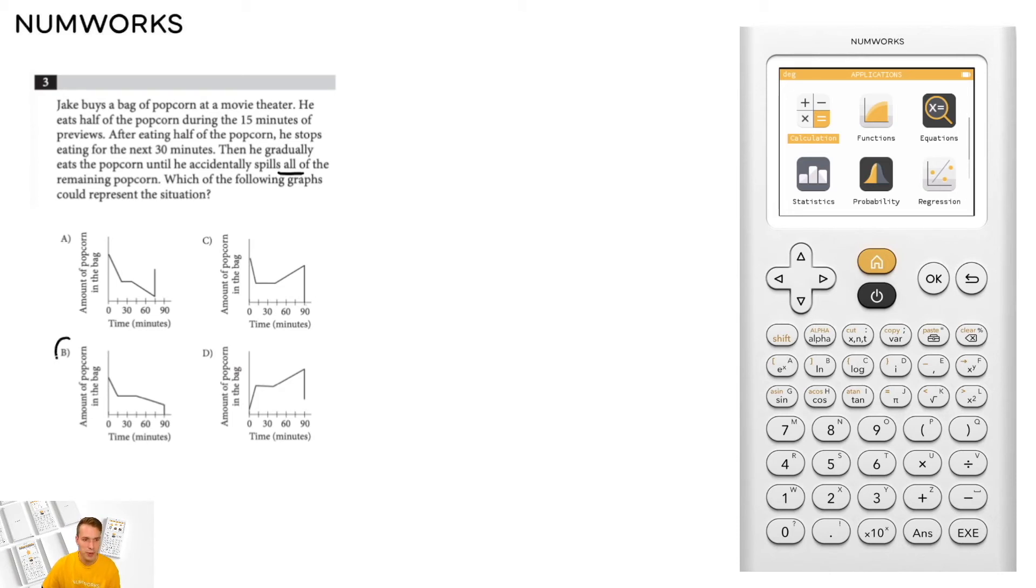Option B is our best choice because it matches the situation where he's eating popcorn, so the amount of popcorn is going down, not eating popcorn, and then gradually eating some more popcorn.